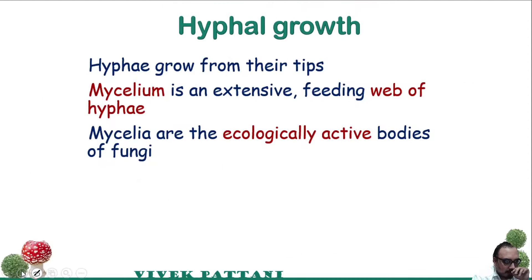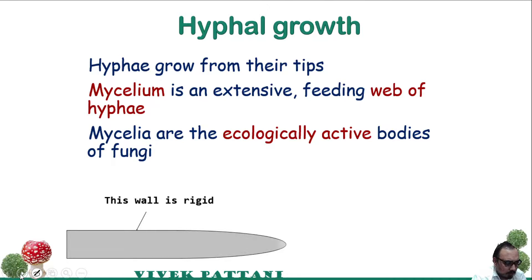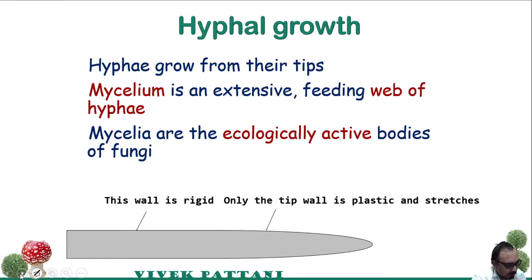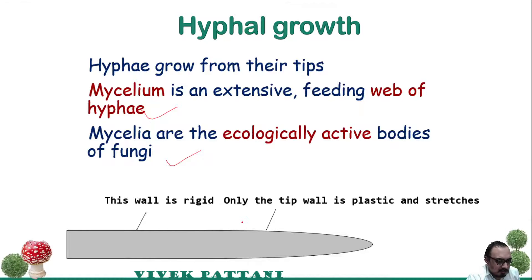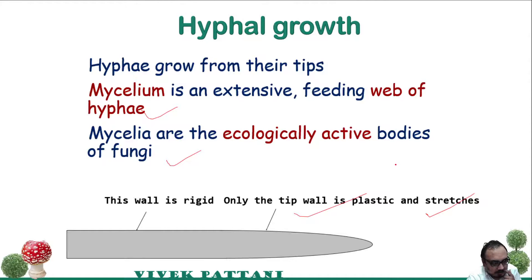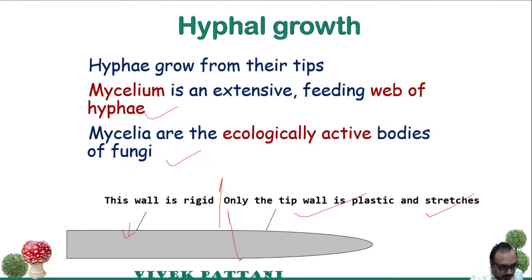Haustoria are found in parasitic plants and animals. Hyphae grow from their tips and the mycelium is an extensive feeding web of hyphae. The mycelia are ecologically active bodies of fungi. The wall is rigid except at the tip, where the wall is more plastic and can stretch easily.